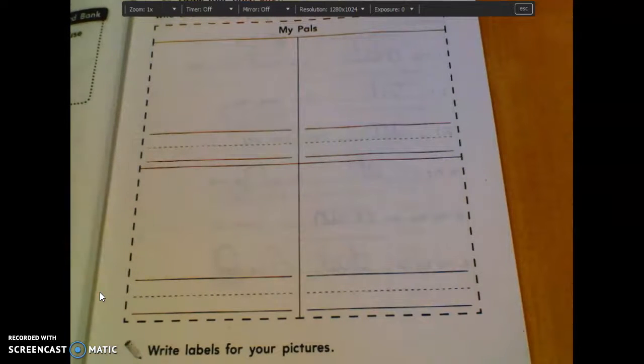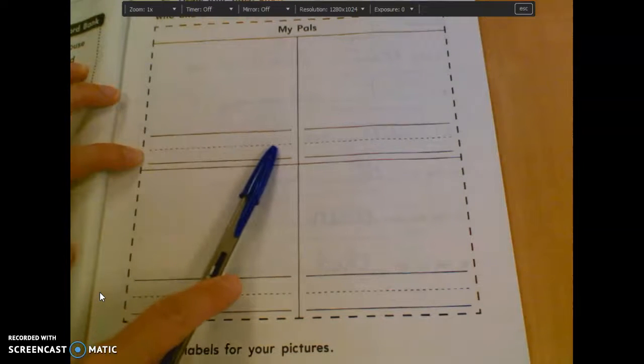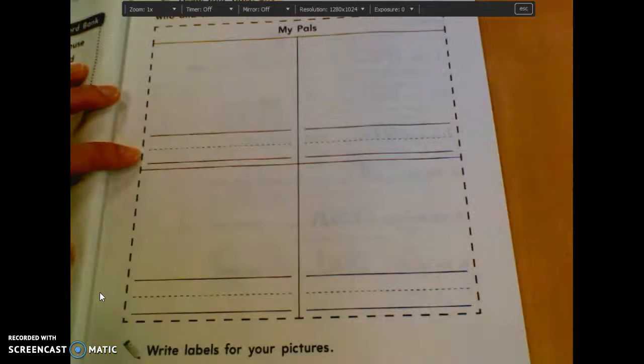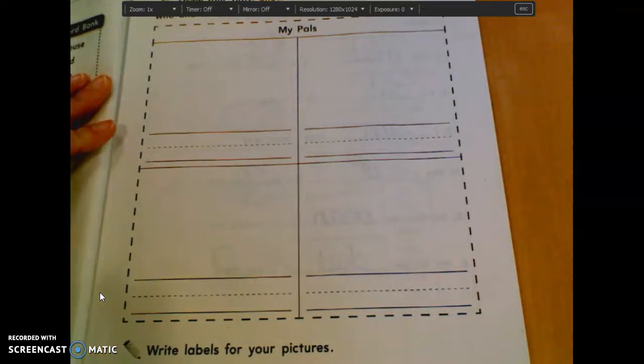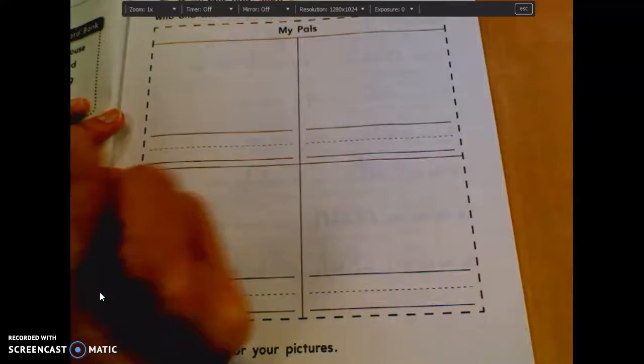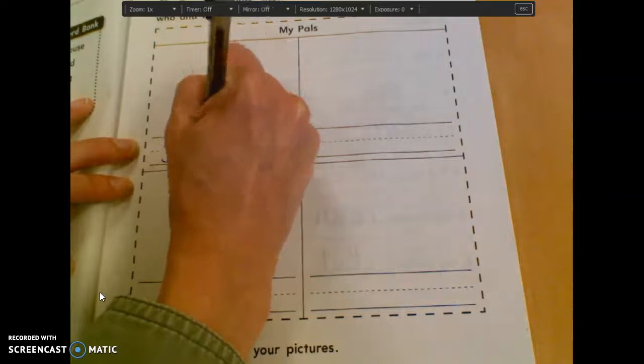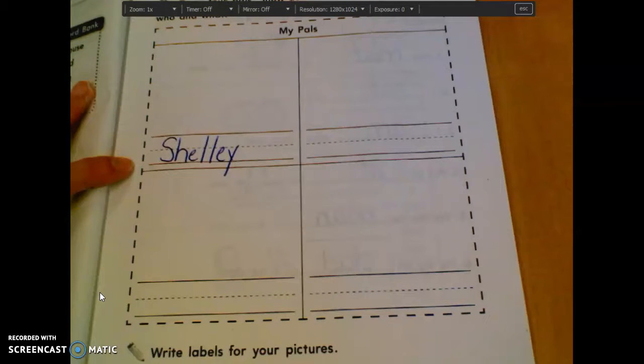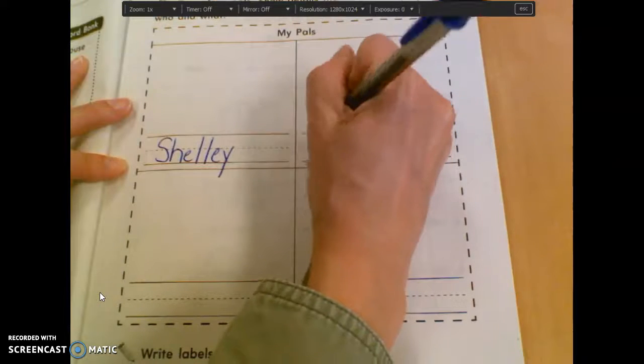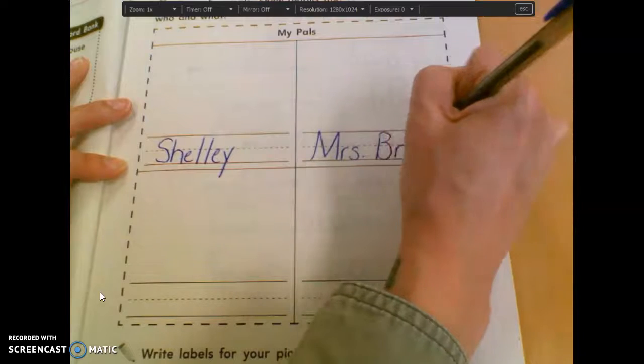And that says to write labels for your pictures. So if you want one of your friends to even be one of your pets, like if you have a cat or a dog, you can fill in your cat or dog's name on the line and then draw a picture. Or if one of your brothers or sisters is your friend. Like my, I have a younger sister and her name is Shelly. So I would say that she's one of my friends. So I'm going to draw a picture of my sister, Shelly. Or if I wanted to say, like, Mrs. Bragg. She is one of my friends. I could write Mrs. Bragg on there and draw a picture of her.